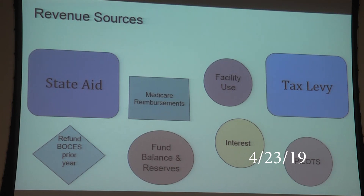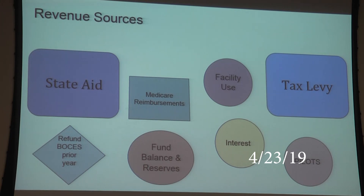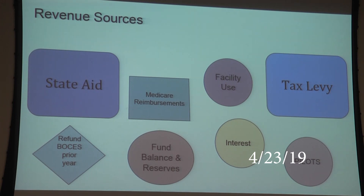Medicare reimbursements are another revenue source. We've had staff changes and a new account clerk who has been very diligent about ensuring we have all the required information — signatures and parent documentation — because without them you cannot get Medicare reimbursement. We've seen a significant increase in that area, which helps grow our budget.